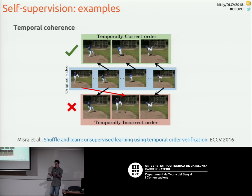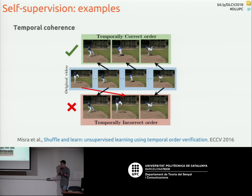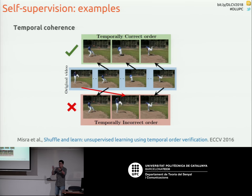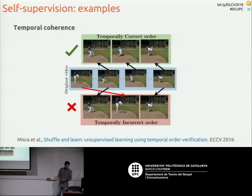For instance, we know that in video we have temporal coherence — some frames come before others, we have this order. So we can train networks to, given some frames, tell what the correct order is or whether they are given in the correct order or not. In the end, you would have a CNN extracting features for frames individually, and these features need to be good enough for telling whether frames are in the correct order. Once trained, you can fine-tune on your target task with fewer data points.